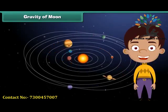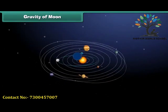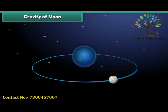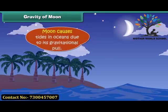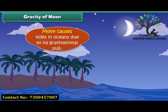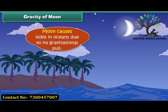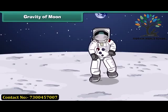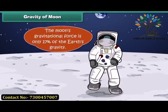You can find big moons in our solar system, but our moon is the biggest compared to the size of the Earth, and it is large enough to cause tides in oceans due to its gravitational pull. You may be surprised to know that the moon's gravitational force is only 17% of the Earth's gravity. For example, a 100-pound (45 kg) person would weigh only 17 pounds, that is 7.6 kg, on the moon.